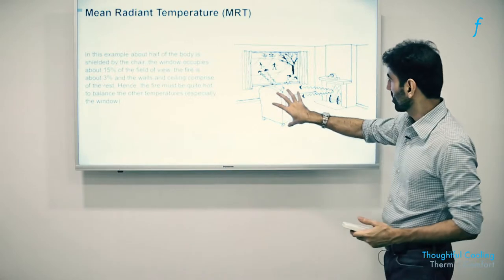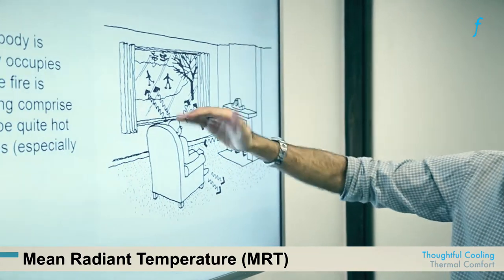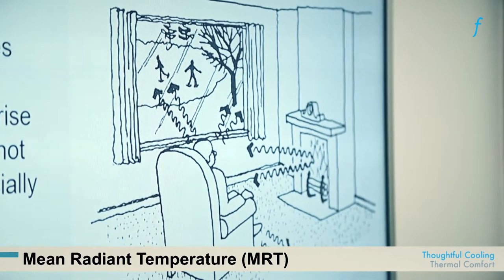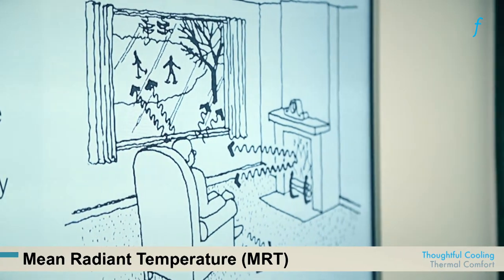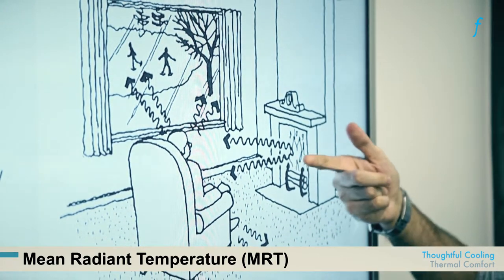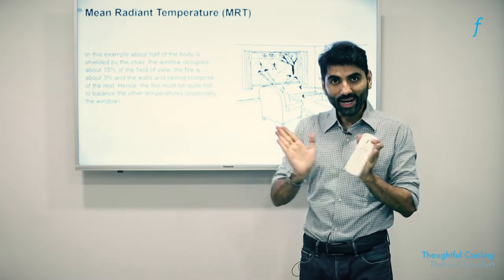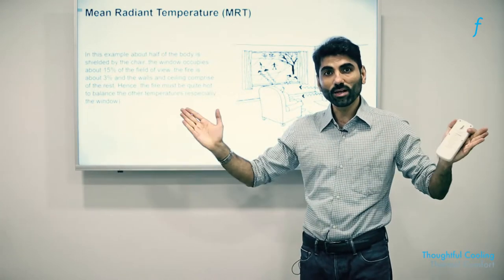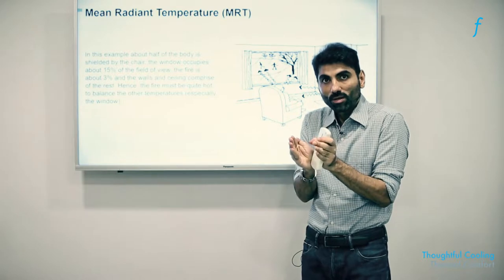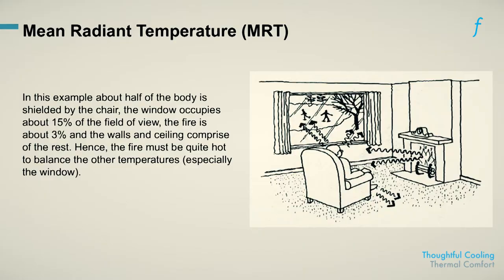To understand how MRT is calculated, consider a person sitting in front of a fireplace in a cold place with no sunlight. Their experience of mean radiant temperature is governed by the angle of the flame: a large flame radiating outward through a broad angle produces a much higher MRT than the same temperature flame that is smaller and exposes the occupant to a lesser angle.